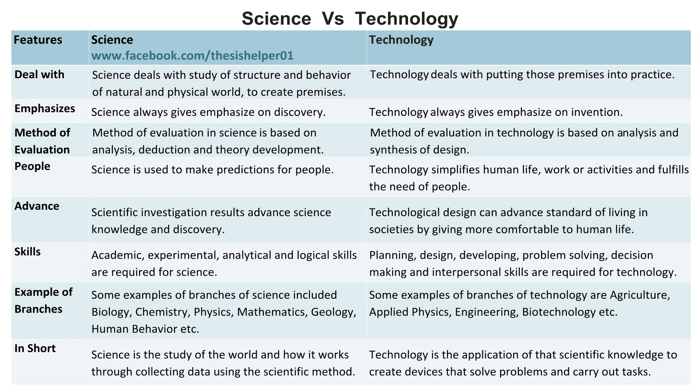Science is used to make predictions for people, whereas technology simplifies human life, work, or activities and fulfills the needs of people.